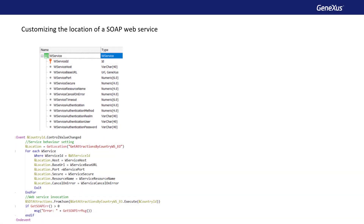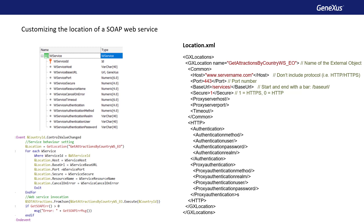The data that we assign to the location of a service can be parameterized in the database. In the example, we create a WS service transaction, and then with a FOREACH command, we access the table containing the values of the attributes to assign the location properties. In addition to defining a variable of the location data type and changing the values of its properties by code, another way to assign the values of a location is by using a location.xml file that we place in the web folder of our target environment — for example, the web folder in a .NET model, or web.inf in Java. When GeneXus compiles the application, if it finds a file named location.xml in that folder, it reads it and assigns the location values dynamically at runtime.